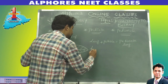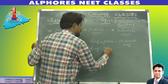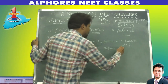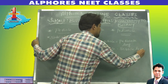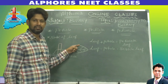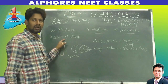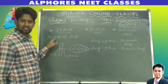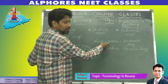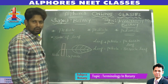Now, if we take a leaf that is without a petiole, that leaf without petiole is called a sessile leaf. Therefore, leaf with petiole is petiolate leaf, and leaf without petiole is called a sessile leaf.